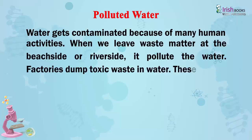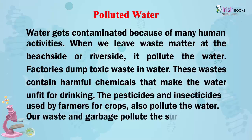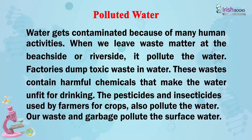Polluted Water. Water gets contaminated because of many human activities. When we leave waste matter at the beach side or river side, it pollutes the water. Factories dump toxic waste in water. These wastes contain harmful chemicals that make the water unfit for drinking. The pesticides and insecticides used by farmers for crops also pollute the water. Waste and garbage pollute the surface water.